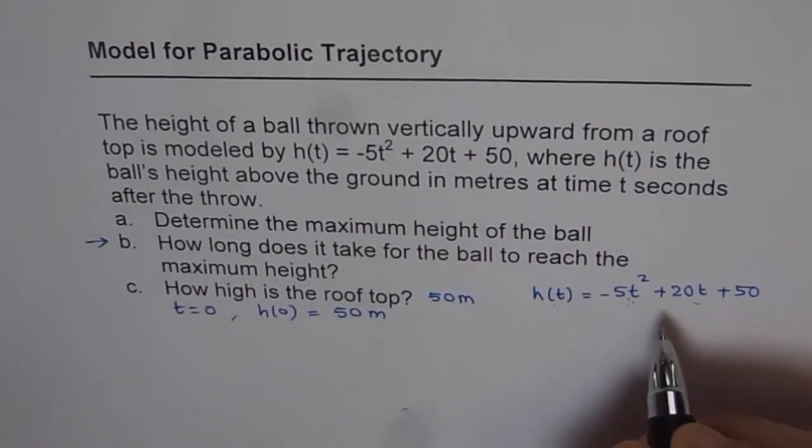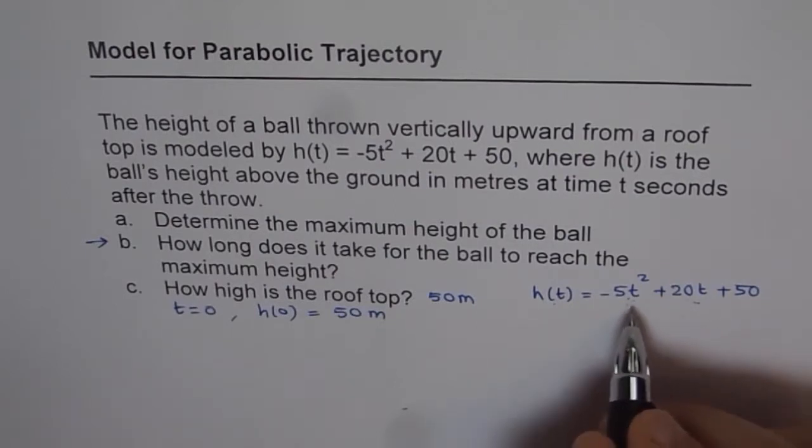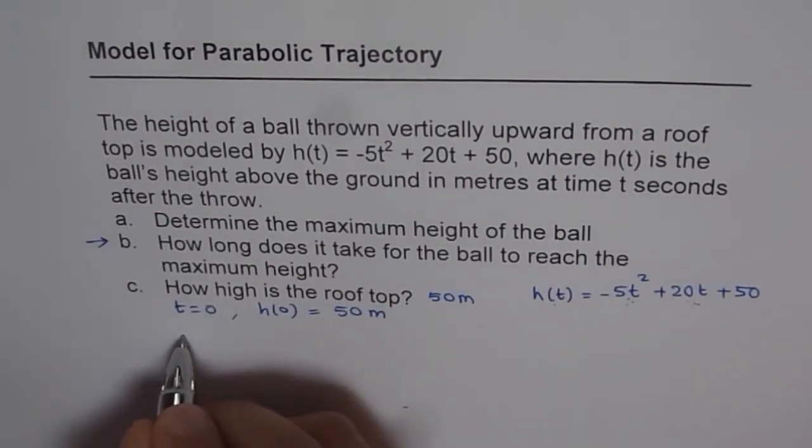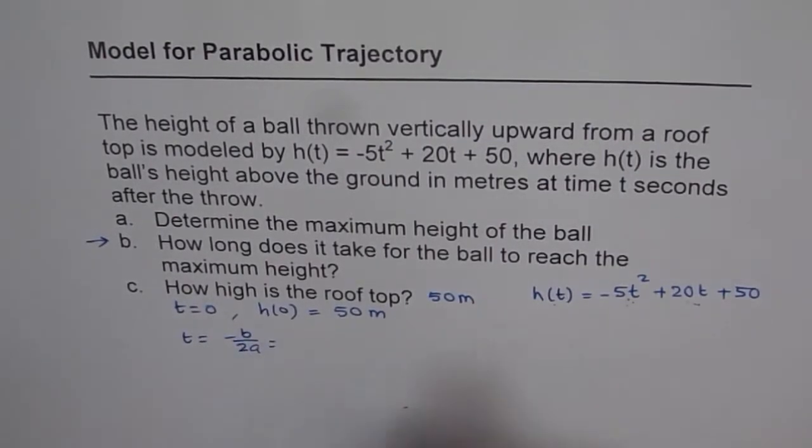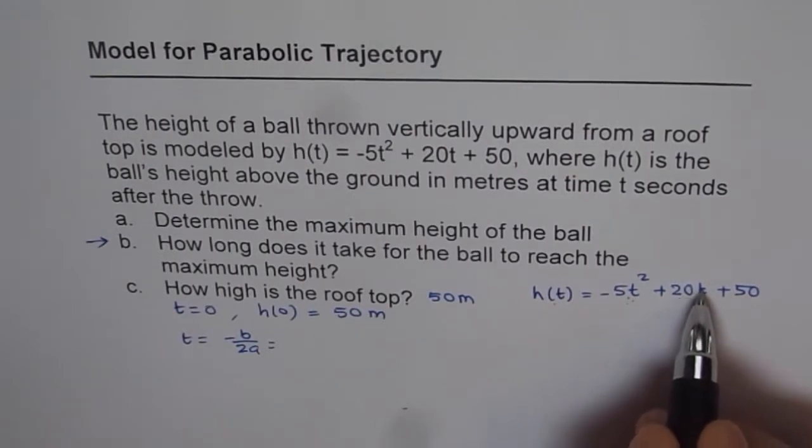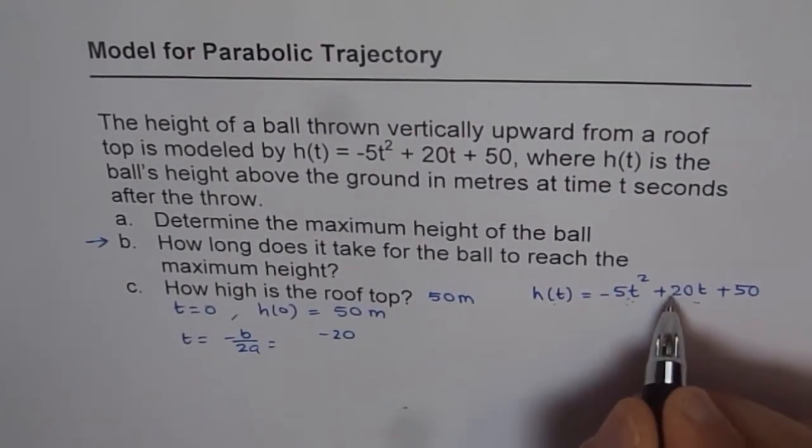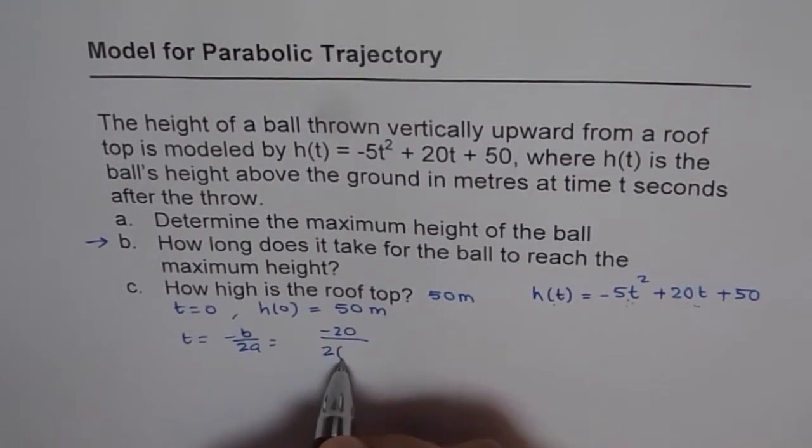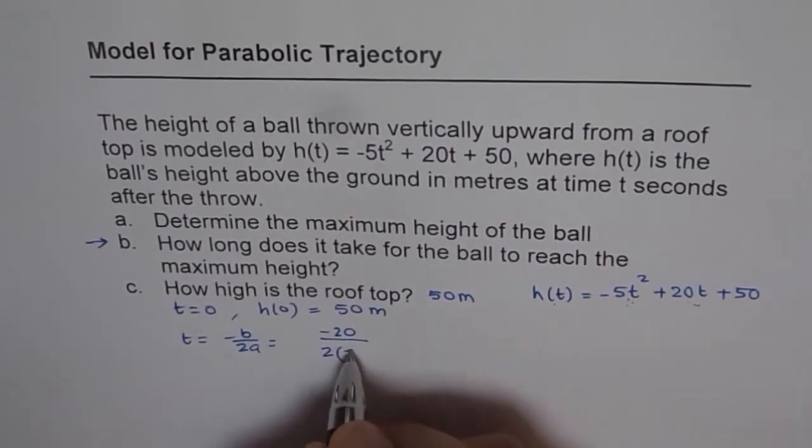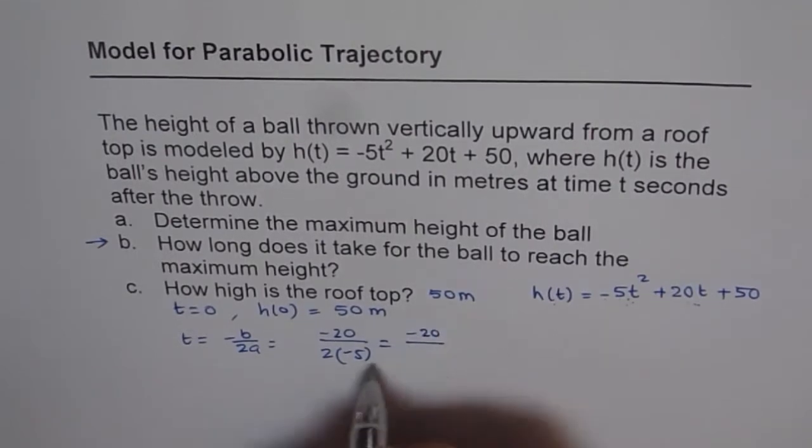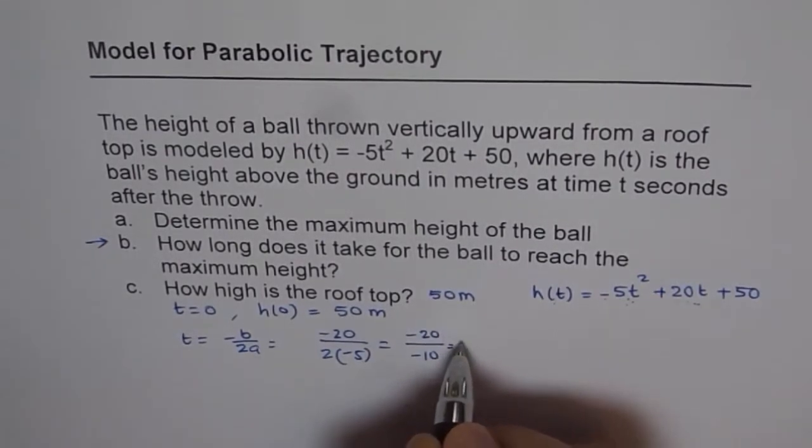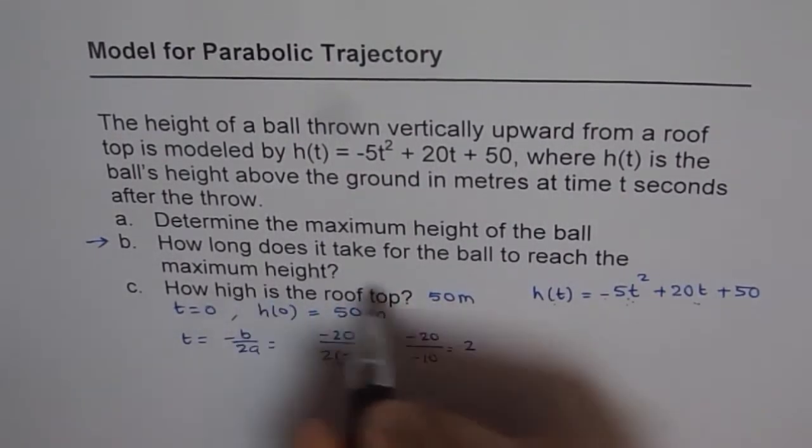Second answer is, we could use minus B by 2A. I will show you all. If I do at t equals minus B by 2A, what I mean is B is the coefficient of t, which is minus of 20. 20 is divided by 2 times A is minus 5. I get minus 20 divided by minus 10 and my answer is 2. So for part B, my answer is t equals 2.